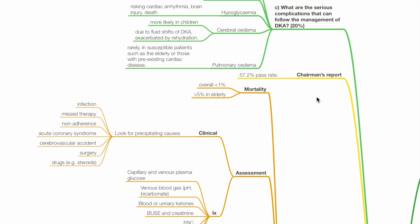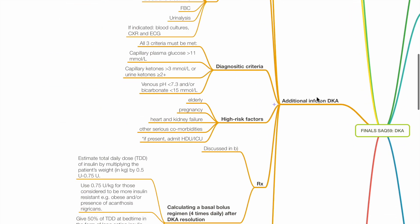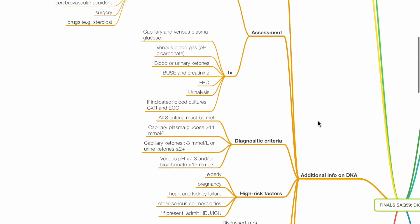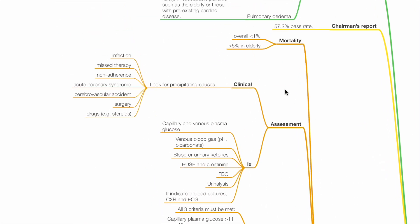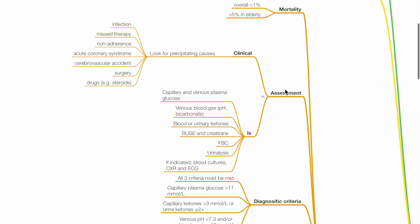Overall 57.2% pass rate. Additional information on DKA. Mortality: less than 1% overall, maybe more than 5% in elderly.